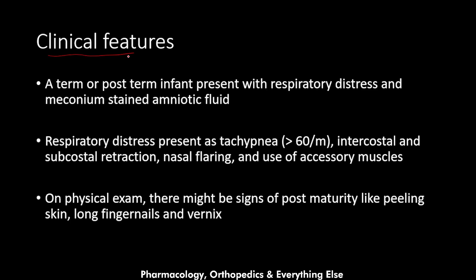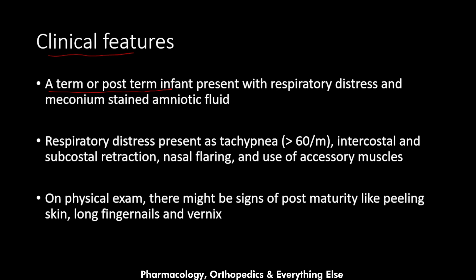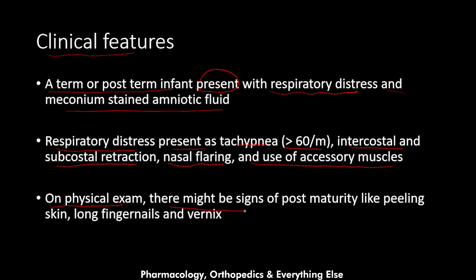Now let's talk about the clinical features. MAS presents in a term or post-term infant, since higher gestational age increases the risk. The infant presents with respiratory distress and meconium-stained amniotic fluid. Respiratory distress includes tachypnea of more than 60 breaths per minute, intercostal and subcostal retraction, nasal flaring, and use of accessory muscles. On physical examination, there may also be signs of post-maturity like peeling skin, long fingernails, and vernix.